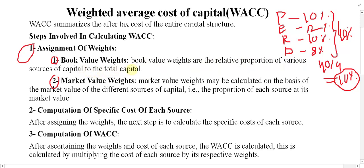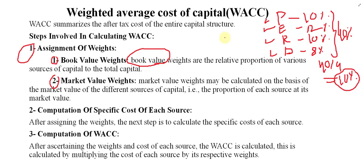In step one, we find out what percentage of total capital belongs to preference, equity, retained earnings, and debt — based on book value. We have two values: book value and market value. Book value means how much you recorded in the books of account when you first issued it, and market value means how much it is worth in the market currently.